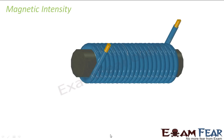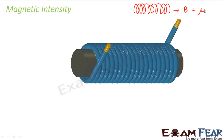Let us look at what magnetic intensity is. To remind you of what we studied earlier, we had talked about a solenoid. The magnetic field inside a solenoid is μ₀nI, where n is the number of turns per unit length, I is the current flowing through the solenoid.